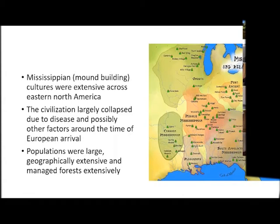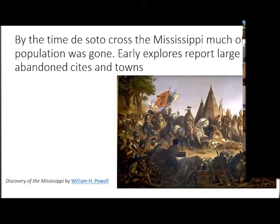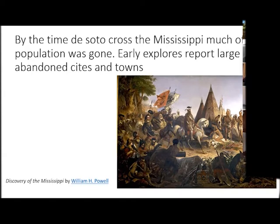When the first European explorers arrived, they documented extensive ghost towns — cities that would have held thousands of people that were essentially abandoned. It's been put together that that was probably associated with disease outbreaks, and most of that collapsed before the explorers arrived. Here is this William Powell painting — DeSoto discovering the Mississippi. It's a funny painting because he looks like he just walked in from the Spanish court. In reality, his expedition made it to the banks of the Mississippi, and they were absolutely starving, dirty, and diminished from how they started.